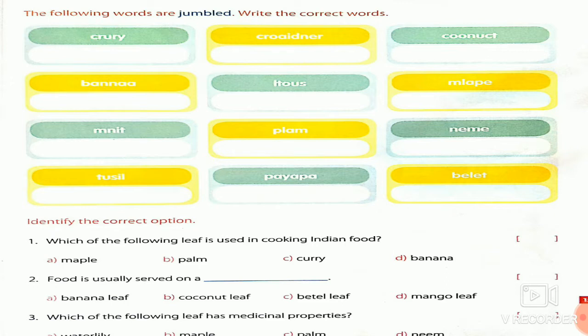The first question is: which of the following leaves is used in Indian cooking? The second question is: food is usually served on the blank. The third question is: which of the following leaves has medicinal properties? Answers are also provided — if you have any doubt, please refer to them.